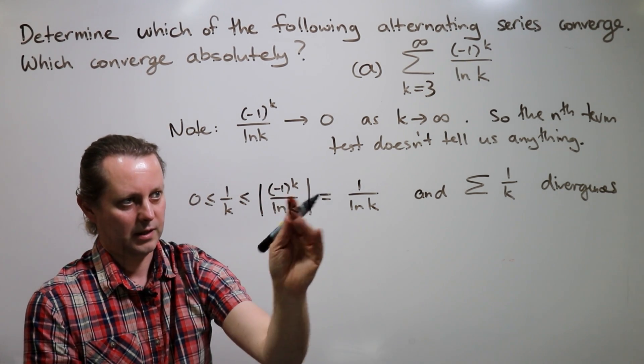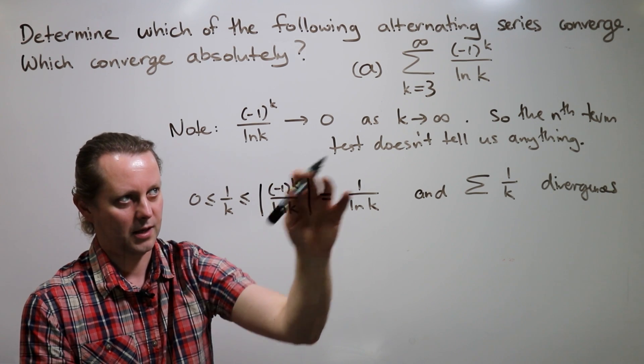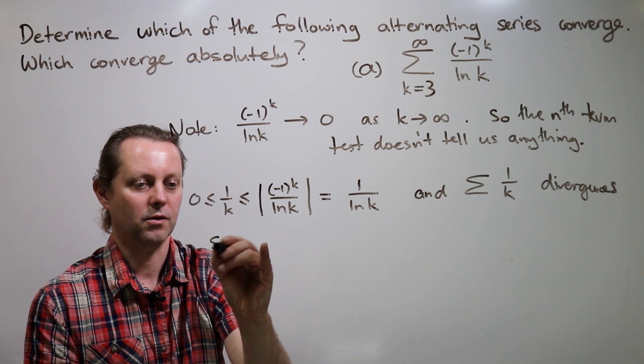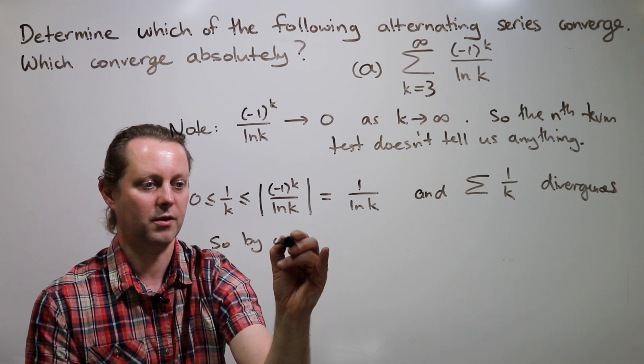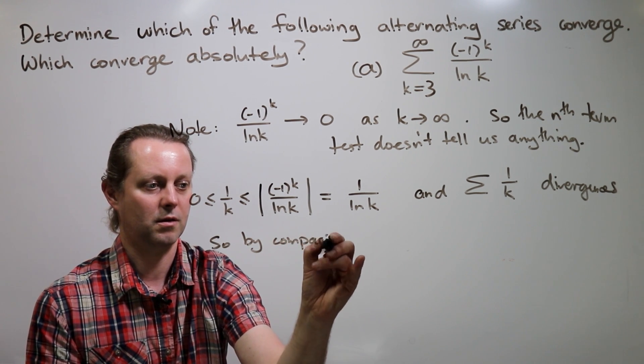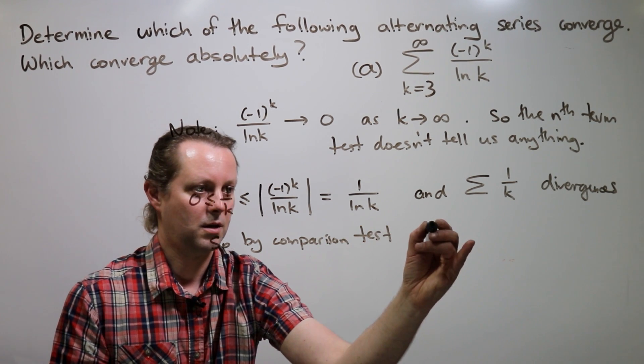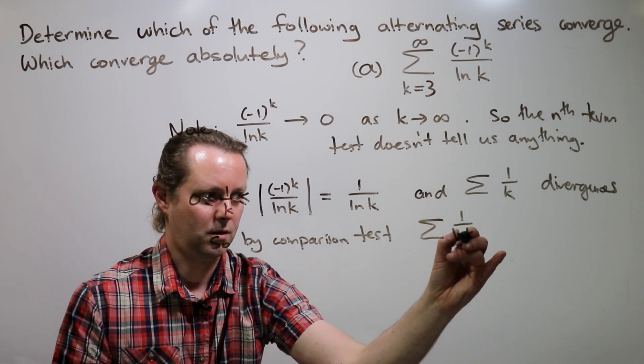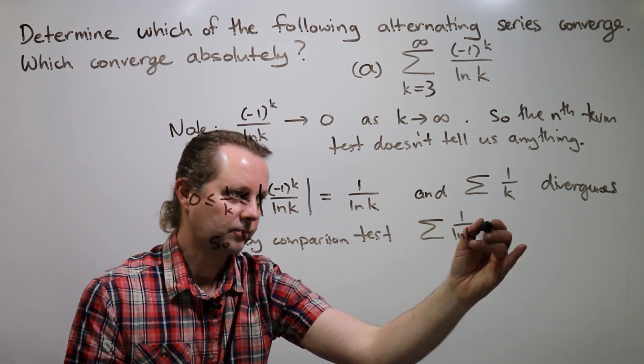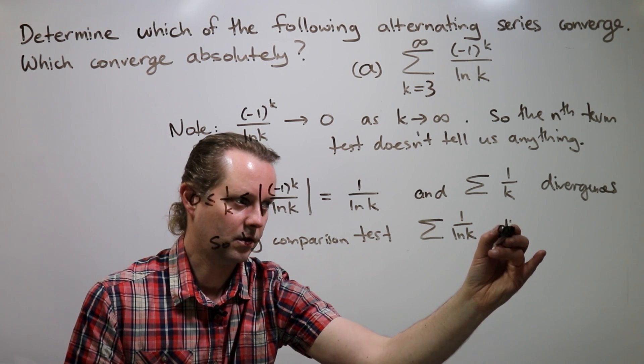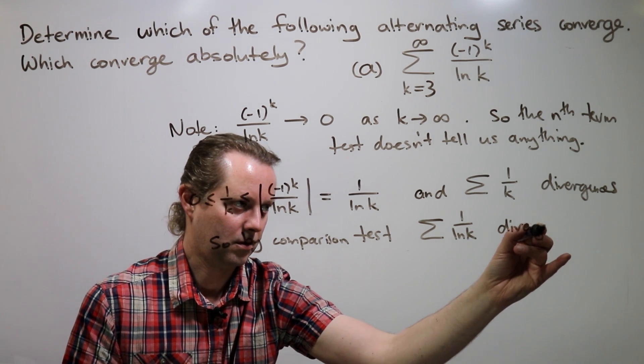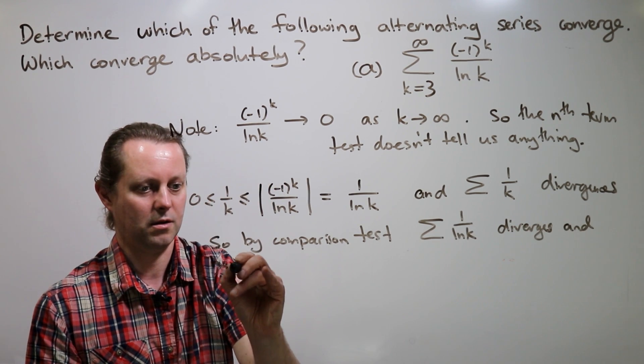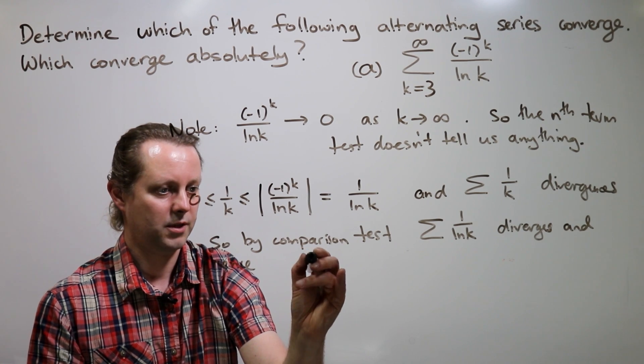means the comparison test tells us that the sum of the absolute value of these terms diverges. So by comparison test, the sum of one over ln k diverges, and hence the series we're interested in is not absolutely convergent.